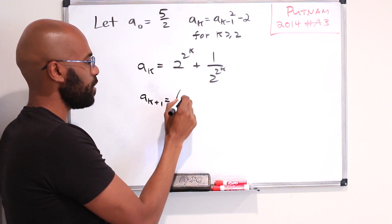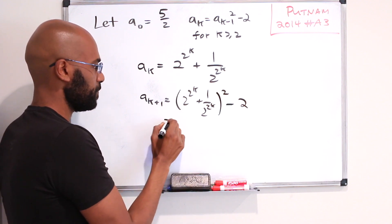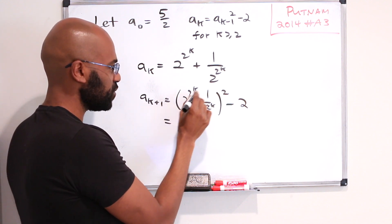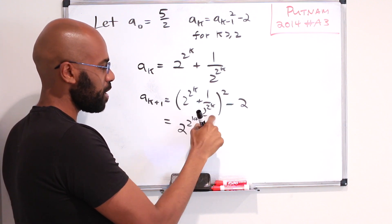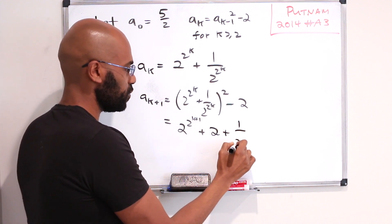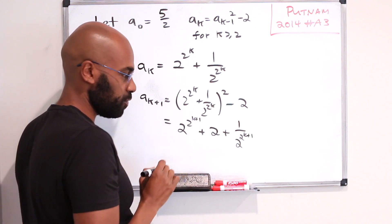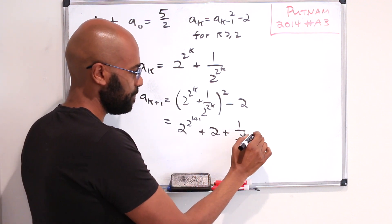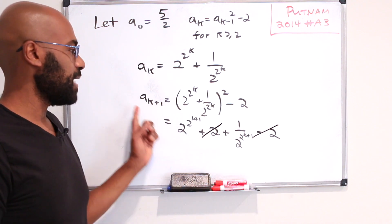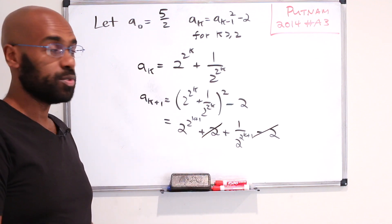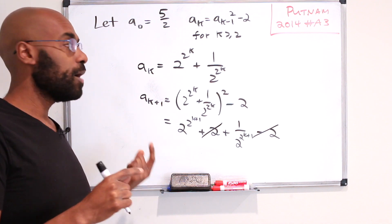a_(k+1) will be the square of this minus 2. So when you square this you get 2^(2·2^k), which is 2^(2^(k+1)) and then plus twice the product of these two and their product is 1. So we get 2 plus 1 over 2^(2^k) and this is squared. So we multiply the exponent by 2 or in other words add 1 to that exponent of the 2 here. And then we subtract 2 from this quantity here. And since these go away, we're left with exactly the type of thing that we want for the next term in the sequence. So this indeed is a formula for the k term of the sequence. Now we can use that to try to find that original product that we're trying to work on.